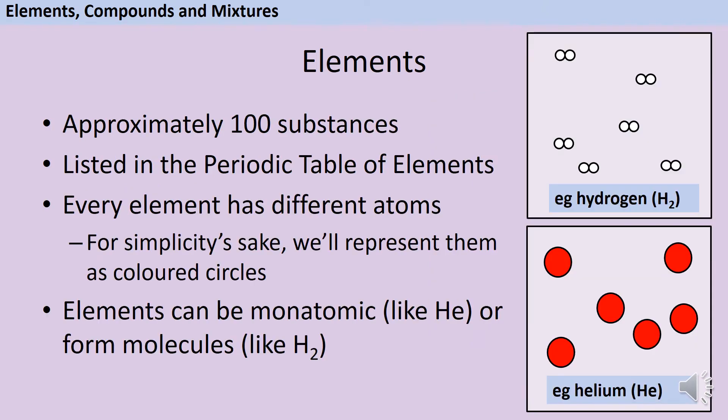There are about 100 elements and these are listed in a document called the Periodic Table of Elements. The smallest part of an element that can exist is something called an atom and each element has a slightly different atom.